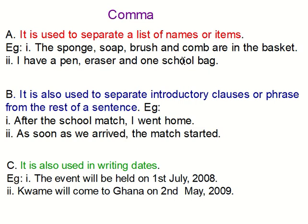The second example: 'As soon as we arrived, the match started.' So 'as soon as we arrived' is a clause because there is a finite verb, and after the finite verb a comma is put. That is the introductory aspect of the sentence. So we see that a comma is used to separate introductory clauses or phrases from the rest of the sentence, as you can see in the examples given.